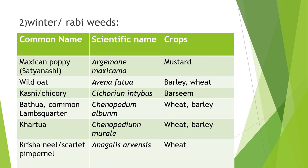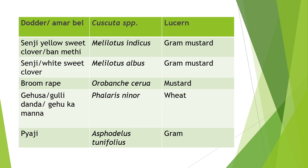Second type is Rabi weeds. Mexican poppy — Argemone mexicana, found in mustard fields. Wild oat — Avena fatua, found in barley and wheat. Chicory — Cichorium intybus, a parasitic weed found in berseem. Batua — Chenopodium album, also known as lamb's quarter, found in wheat and barley. Khartua — Chenopodium murale. Krishan neel — Anagallis arvensis. Dodder or Amalphal — a parasitic weed of lucerne.